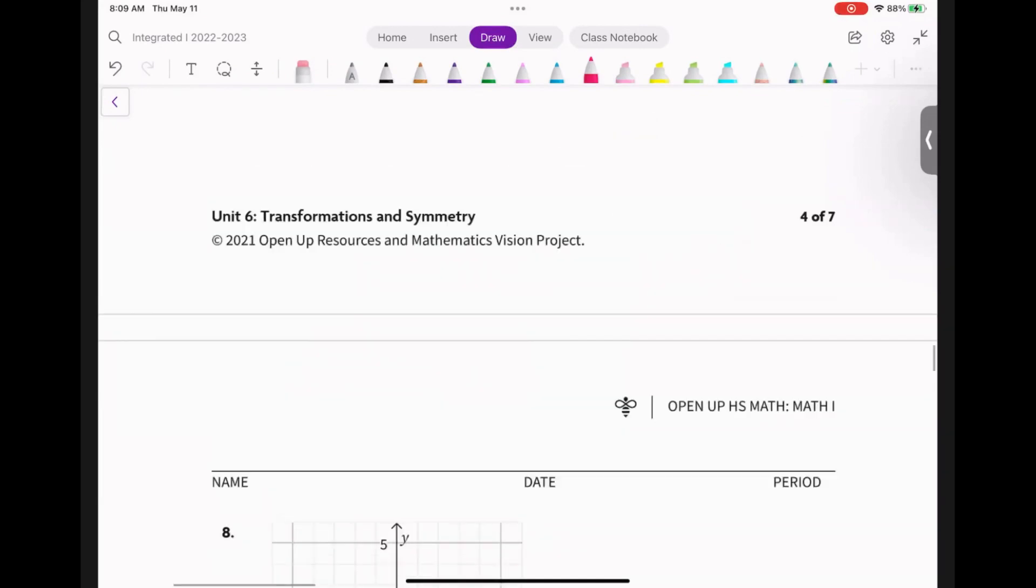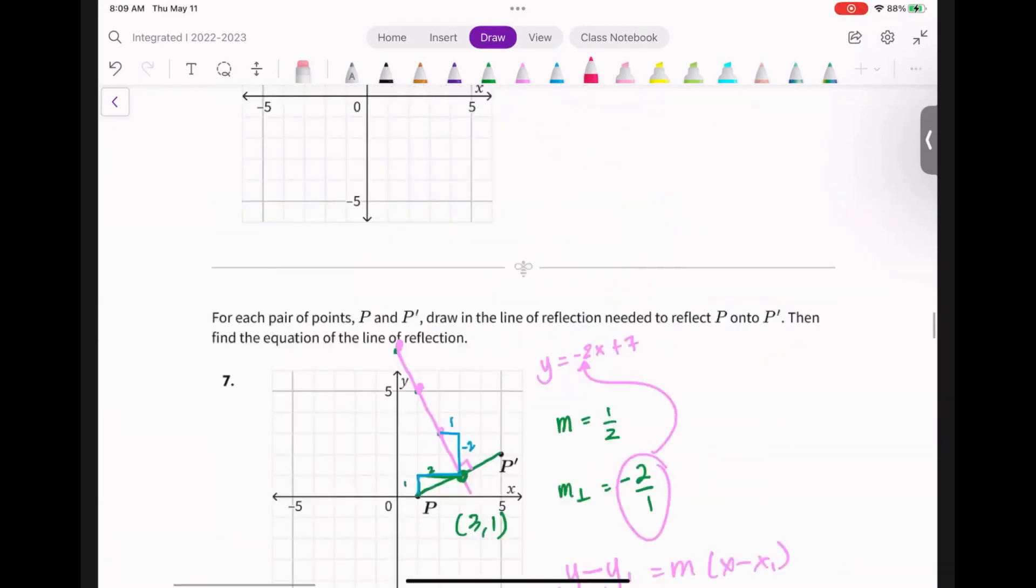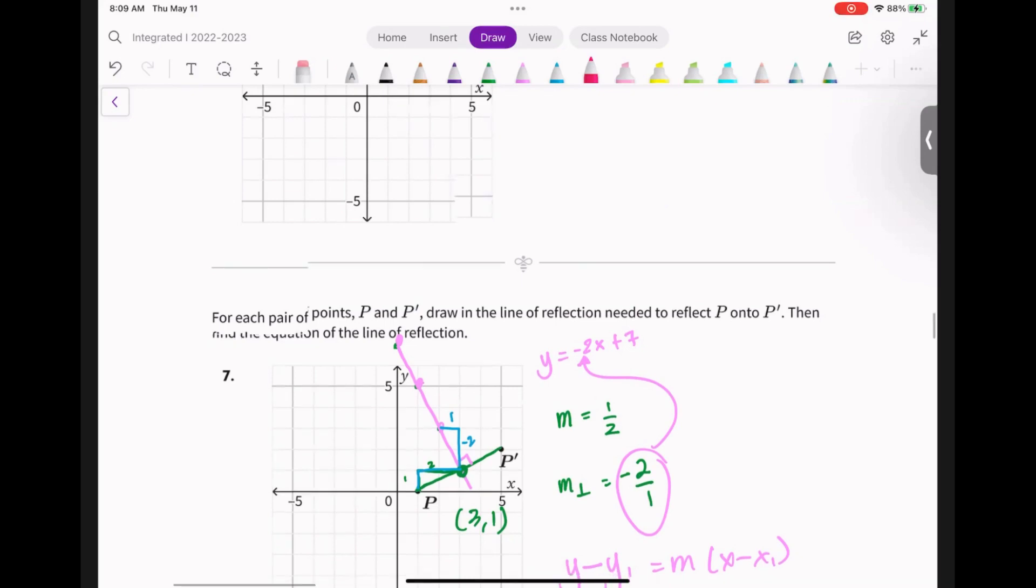The directions for this one are all the way up here. It says, for each pair of points, draw a line of reflection needed to reflect P onto P' and then find the equation of the line of reflection.